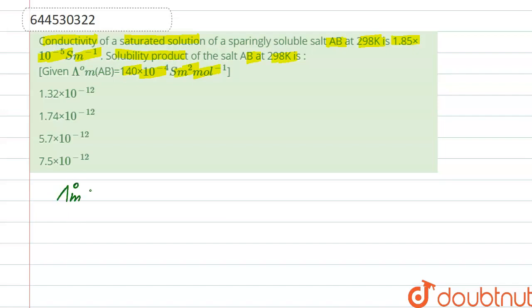Molar conductivity is equal to conductivity, that is κ × 1000 upon concentration. So here conductivity is given, that is 1.85 × 10^-5, so we put here 1.85 × 10^-5 into...